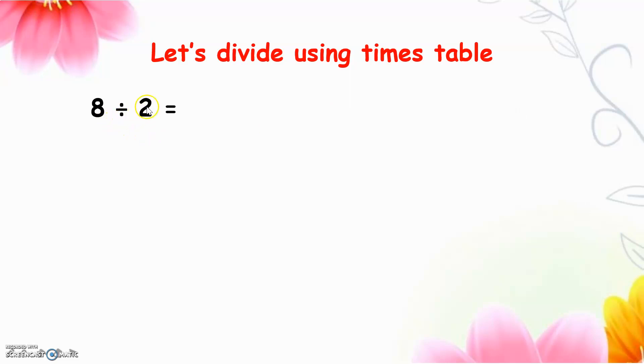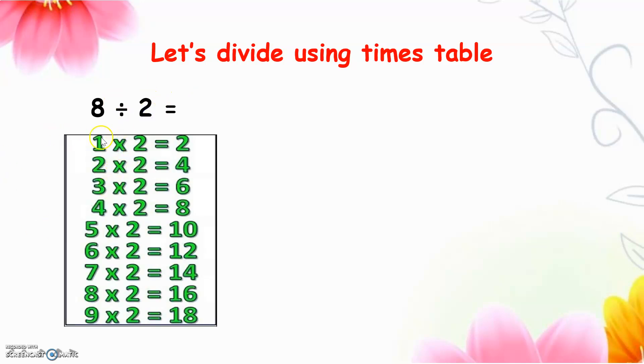8 divided by 2 equals to. In the last lesson, teacher showed you three methods. The first one we use picture, then number line, and lastly we use subtraction. Here I want to show you how we use the times table to find the answer. As we know, divide is the inverse operation of times. We will use the times table 2, and then 8 is the total. So we should find 8 at the product here.